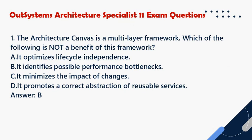Question 1. The Architecture Canvas is a multi-layer framework. Which of the following is not a benefit of this framework? a. It optimizes lifecycle independence. b. It identifies possible performance bottlenecks. c. It minimizes the impact of changes. d. It promotes a correct abstraction of reusable services. Answer: B.